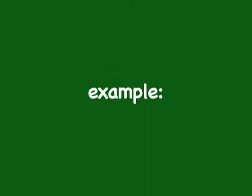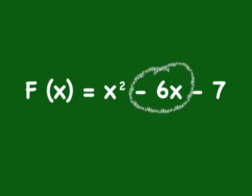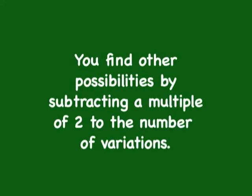Here's an example: f(x) = x² - 6x - 7. This polynomial has one variation of signs. x² is positive while -6x is negative, which means there is exactly one positive root. Had there been two variations, the possibilities would be two positive roots or none, because the rule states that you find other possibilities by subtracting a multiple of 2 from the number of variations.